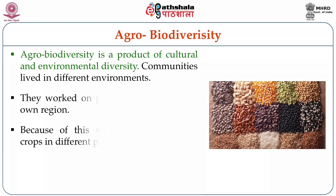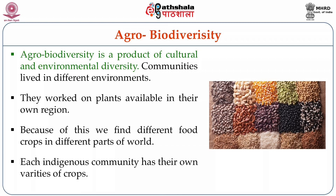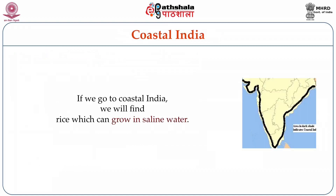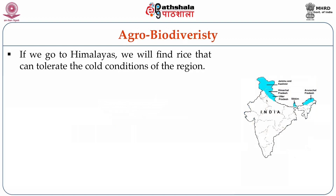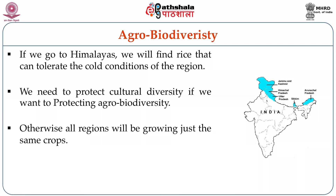Communities lived in different environments and worked on plants available to them. Because of this, we find different plants and different animals grown by people in different areas. Each indigenous community has their own varieties of crops. If we go to coastal India, we will find rice which can grow in saline waters. If we travel to the Himalaya, we will find a rice that can tolerate very cold conditions. We need to protect cultural and environmental diversity if we have to protect agrobiodiversity. Otherwise, all regions will be growing the same kind of crop.